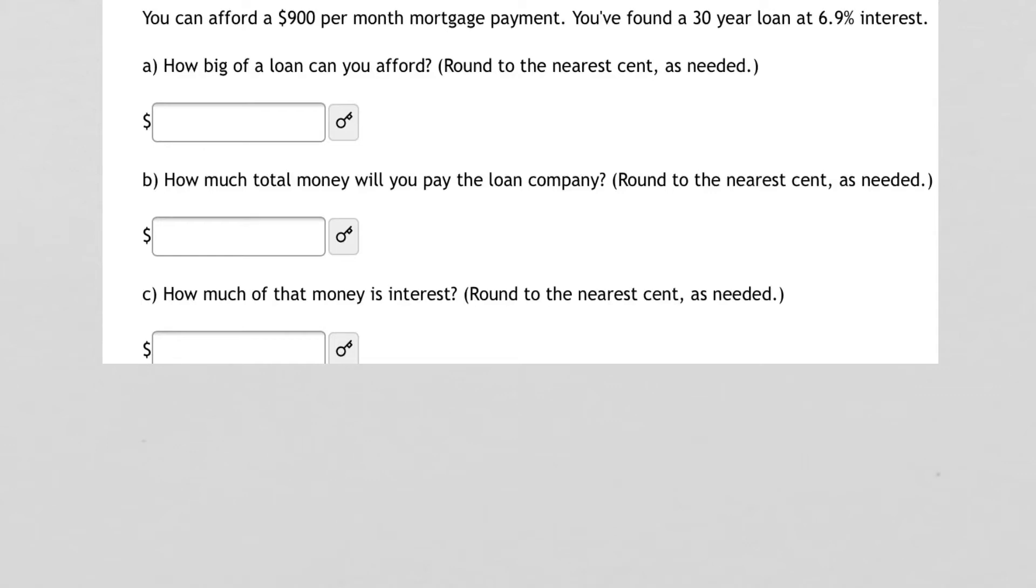You can afford a $900 per month mortgage payment. You found a 30-year loan at 6.9% interest. Question A, how big of a loan can you afford? Question B, how much total money will you pay the loan company? And question C, how much of that money is interest?